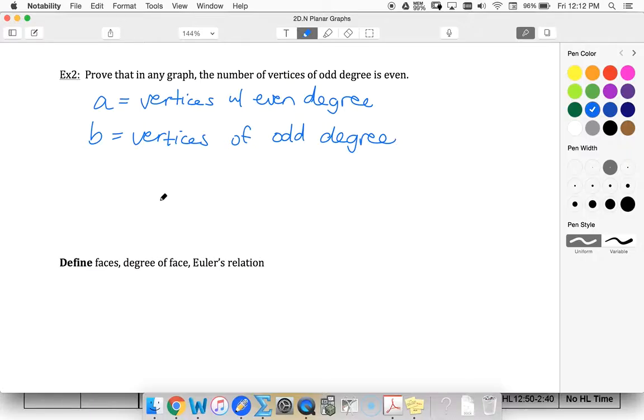we know that the degrees of vertices have to add up to be even because degrees equals two times the number of edges.